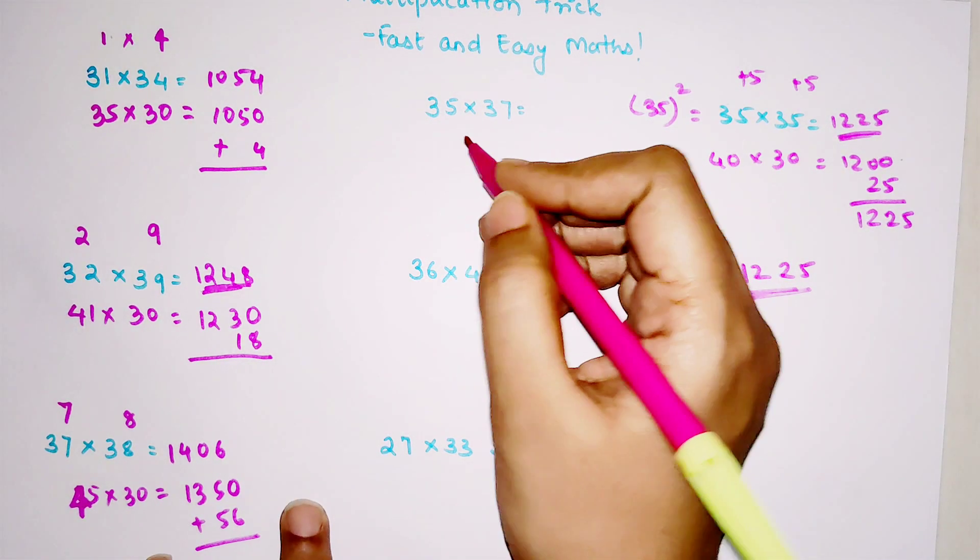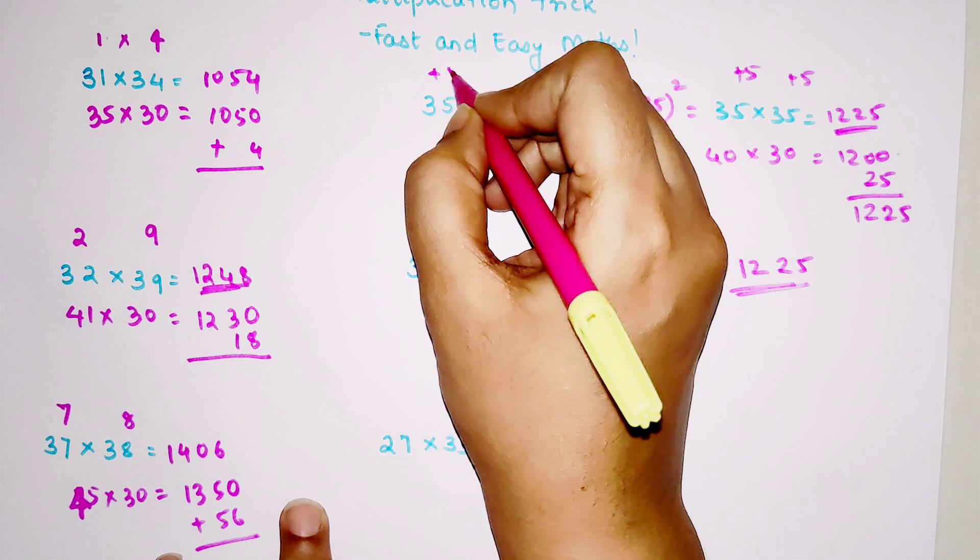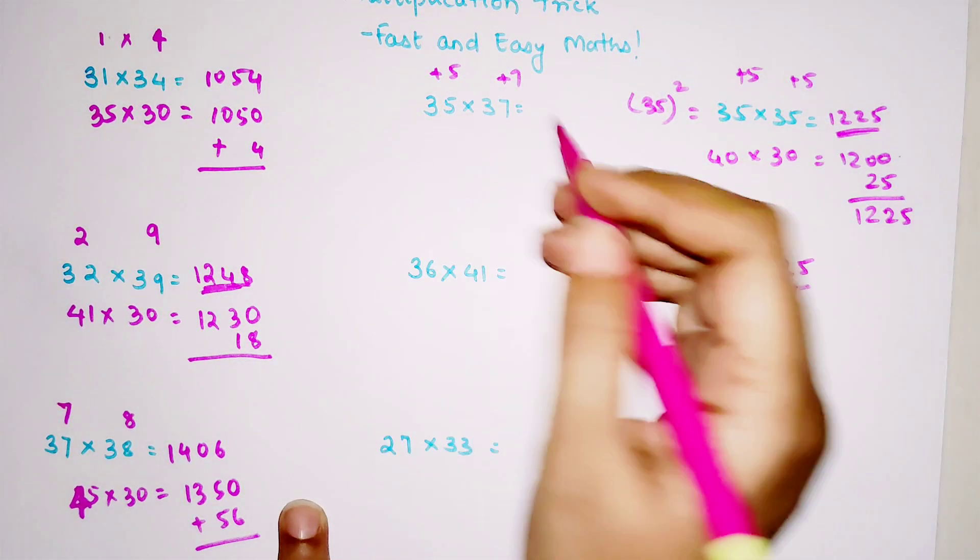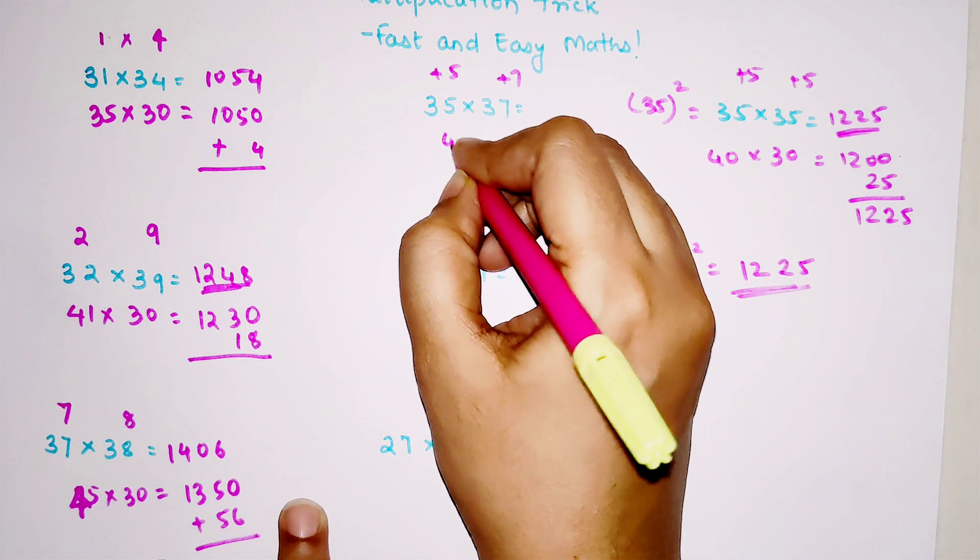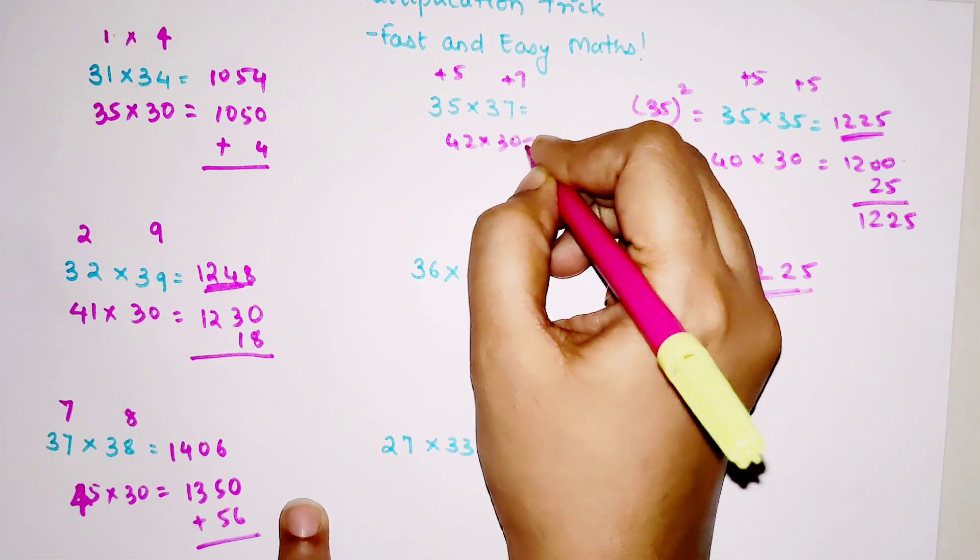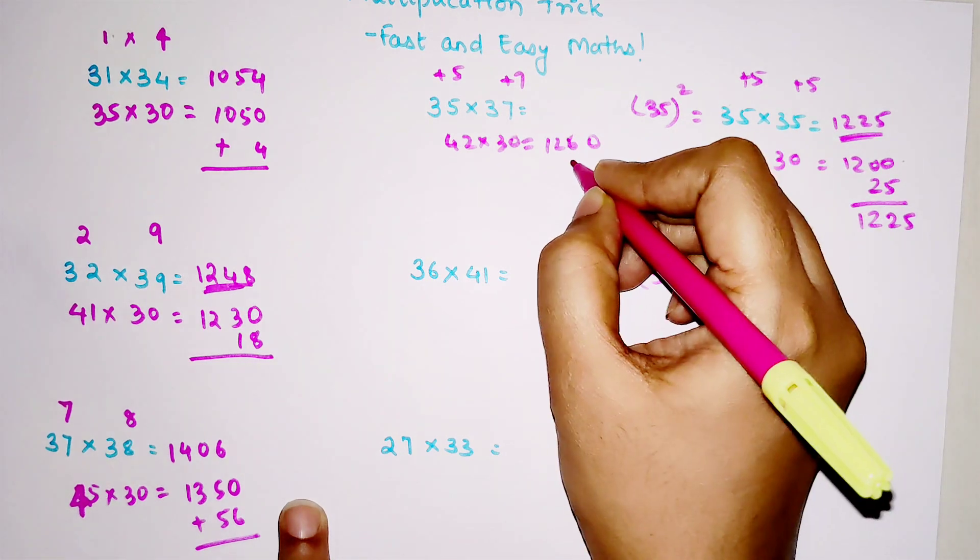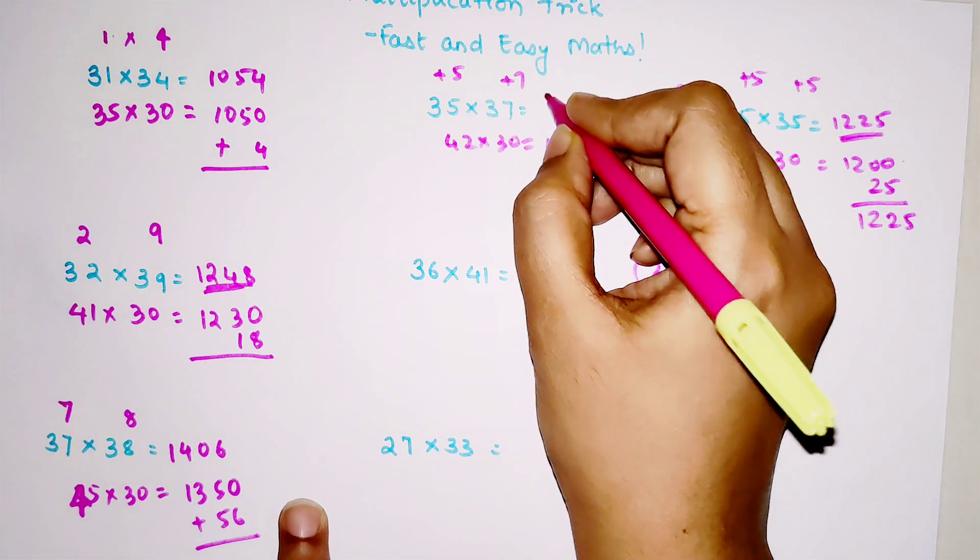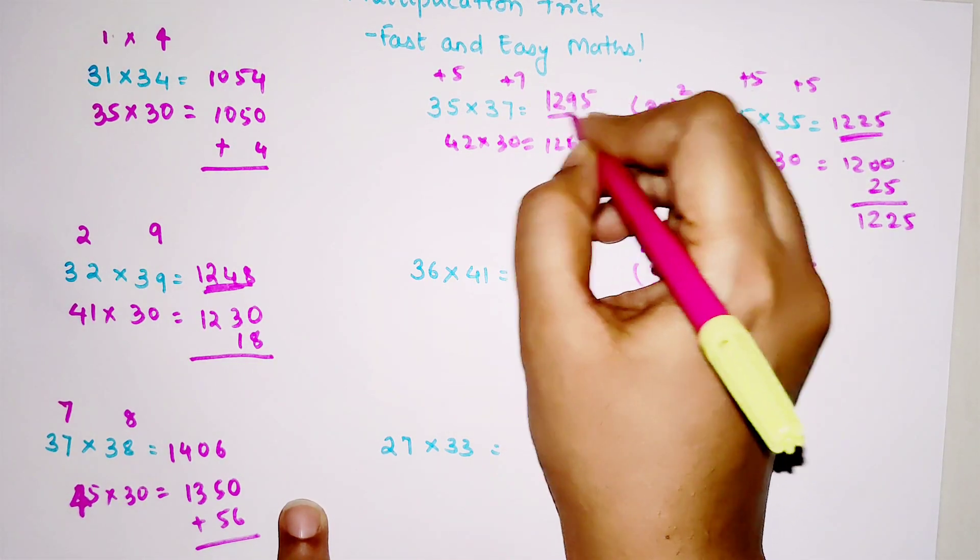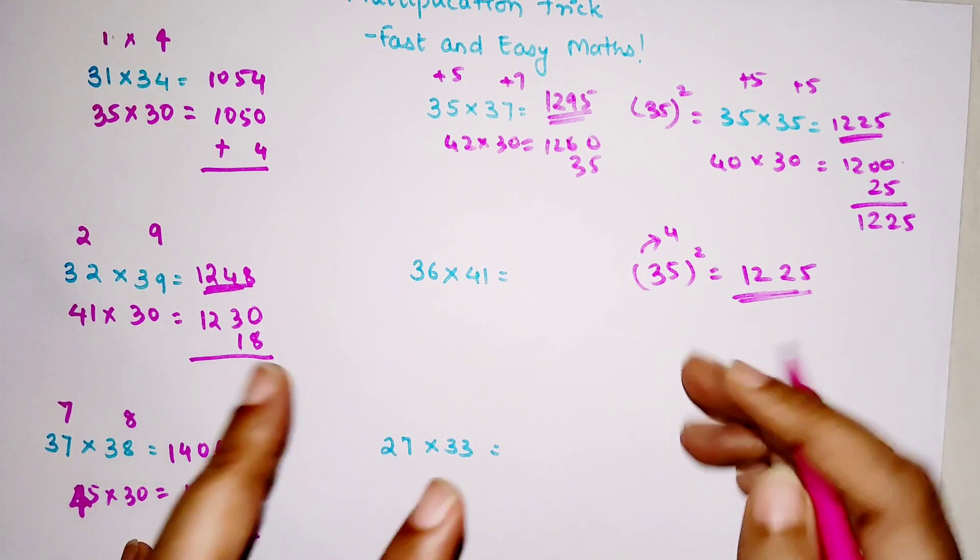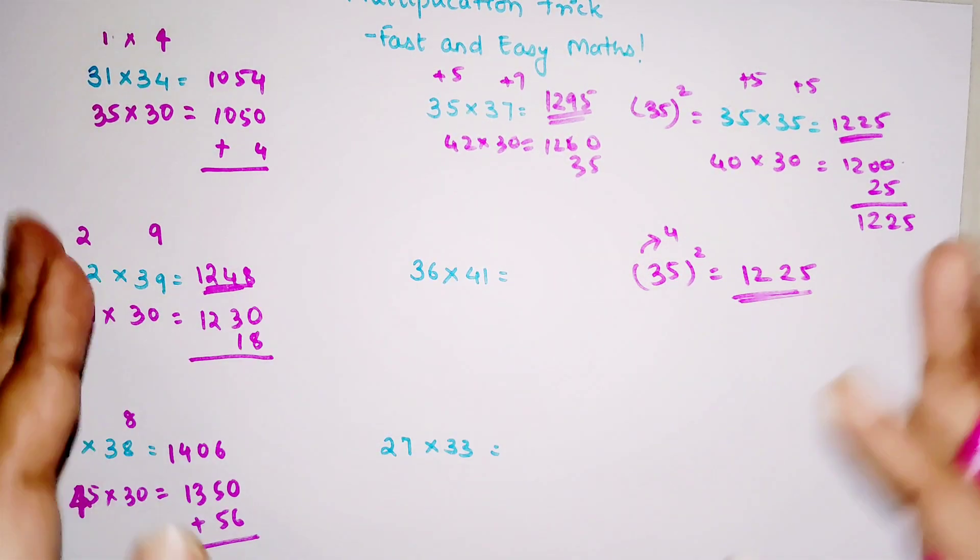Now for 35×37, plus 5 and plus 7. Let's do this orally. We have 42 into 30, that gets you 1260, and 35. So your final answer is 1295. You saw how easy your multiplication has become.